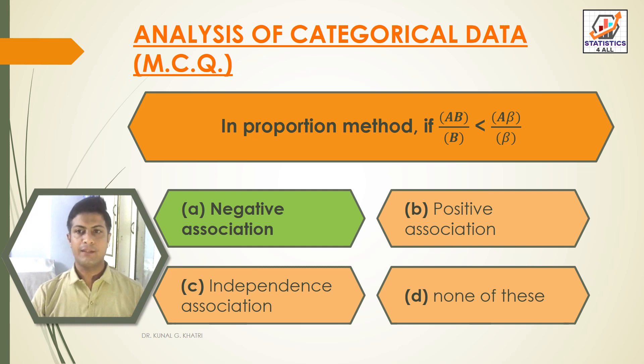In the proportion method, if AB divided by B is less than Aβ divided by β, it indicates negative association.